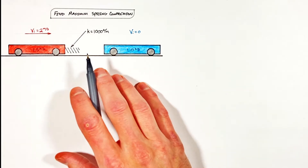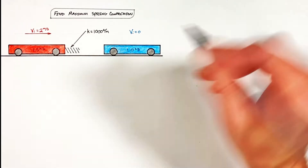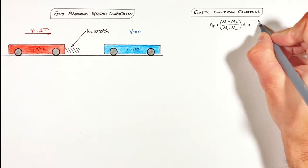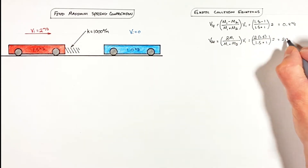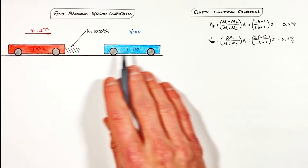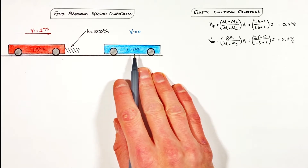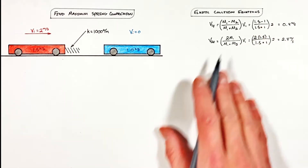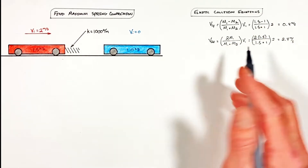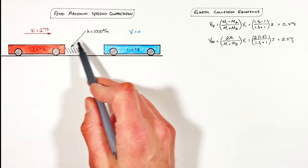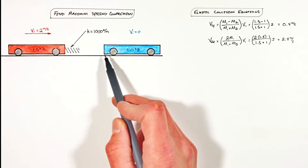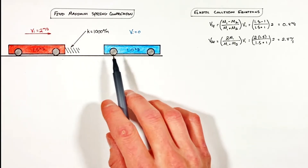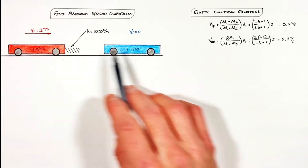Because this is an elastic collision, when most people try to solve this problem the first thing they try to do is turn to the elastic collision equations. Now the elastic collision equations tell us the final velocity of each of these carts — there's a link to another video about those — but realize these equations are only telling us the final velocity. They're not telling us what's happening while these two carts are colliding and while the spring is compressed. To get a better understanding we need to turn to a graph of the velocity of these two carts.